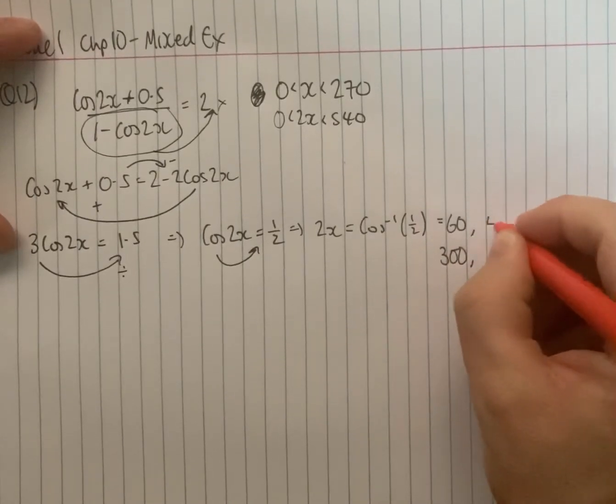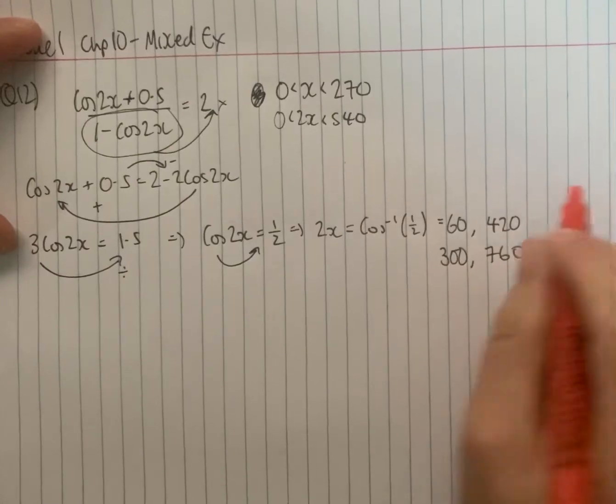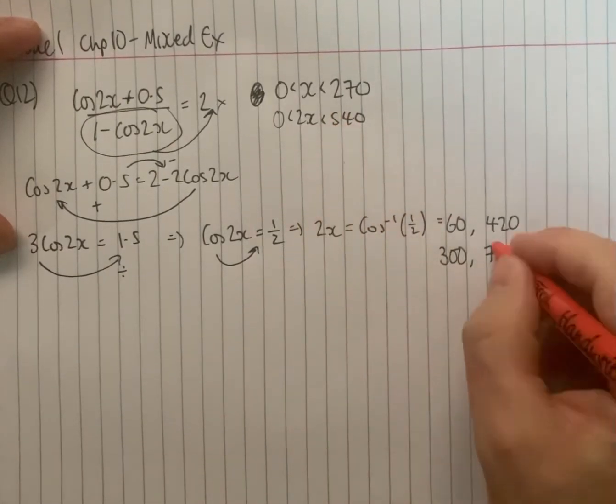If we add 360 to each of those, 420, 660. 660 is outside of 540 so that's not going to work.